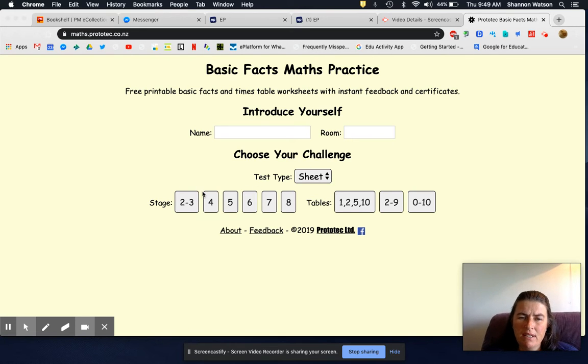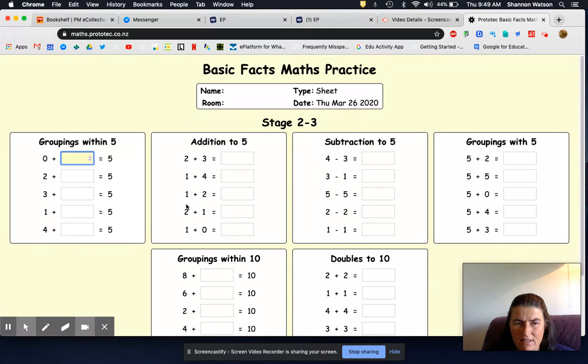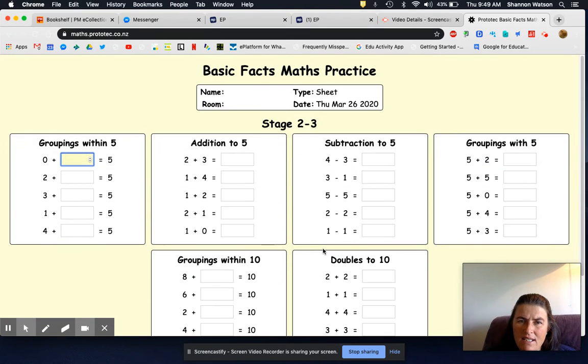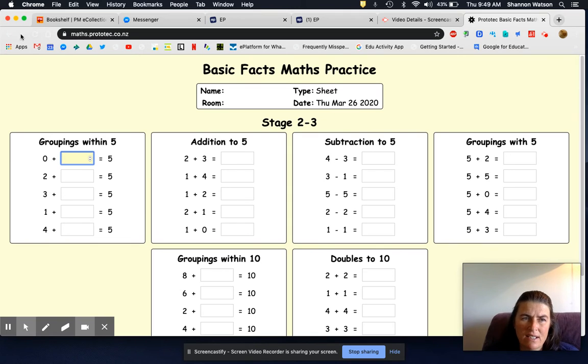So you get to pick your stage. That's about year eight, that's about year seven, that's about year six, that's about year five, year four, and if you click on stage two to three, the internet is taking a little bit of a long time. You can see that stage two to three is nice and simple.